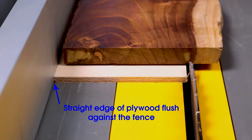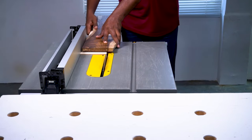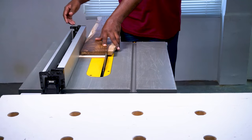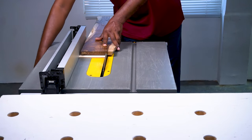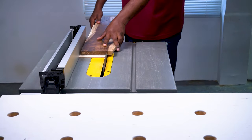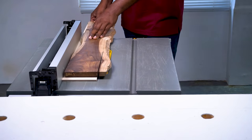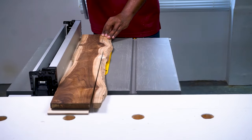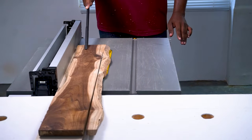Set the rip fence so that any curve in the board gets removed with this cut. You should position it such that any flaws are eliminated, leaving a straight edge. Push the wood and board through the saw while keeping your hands away from the blade. Use a push stick or push block for added safety.